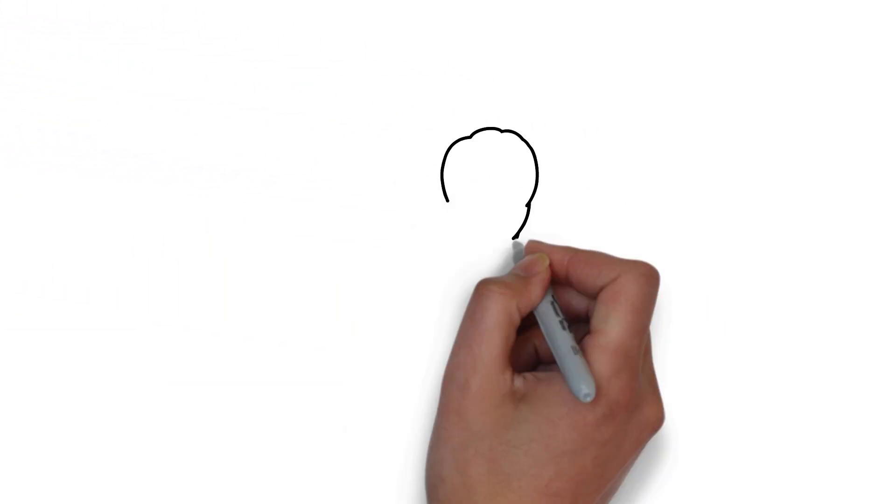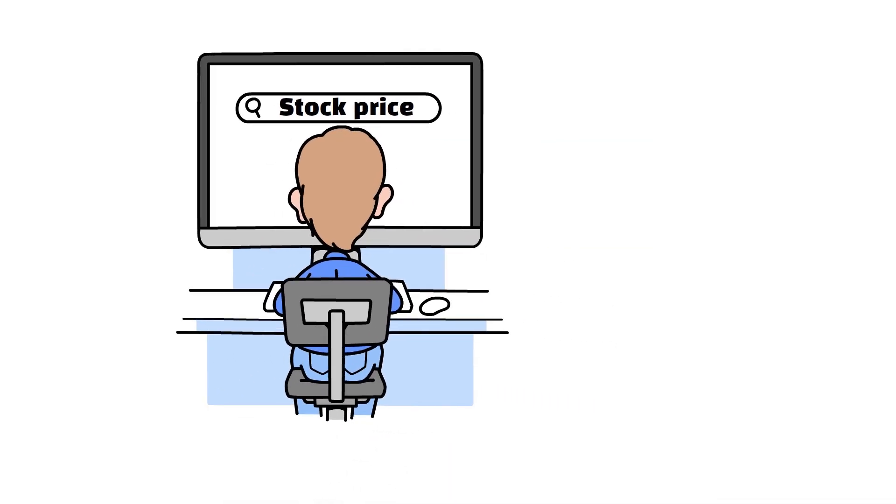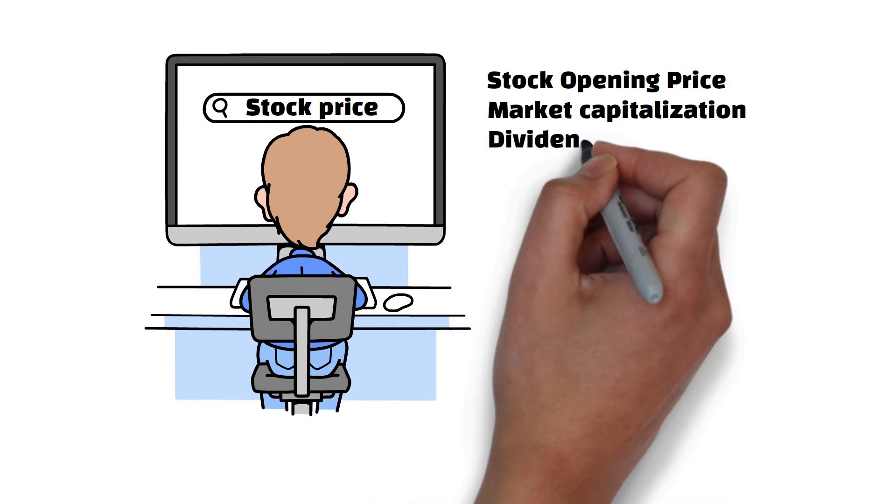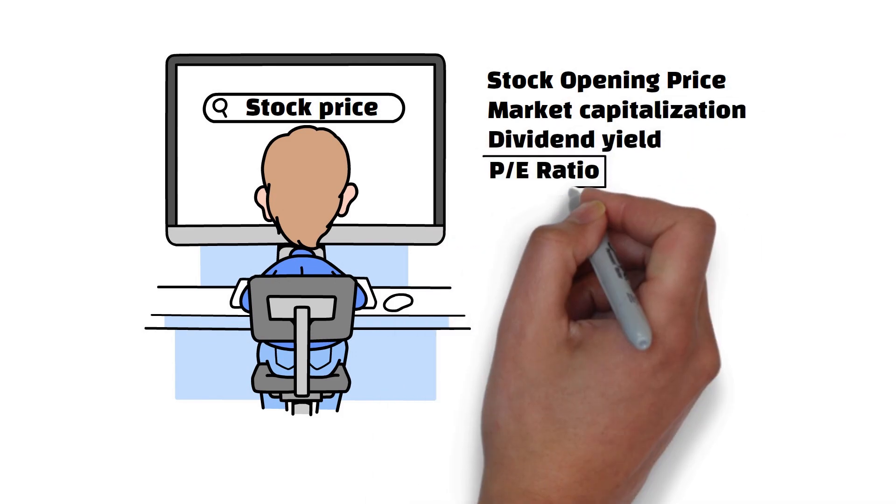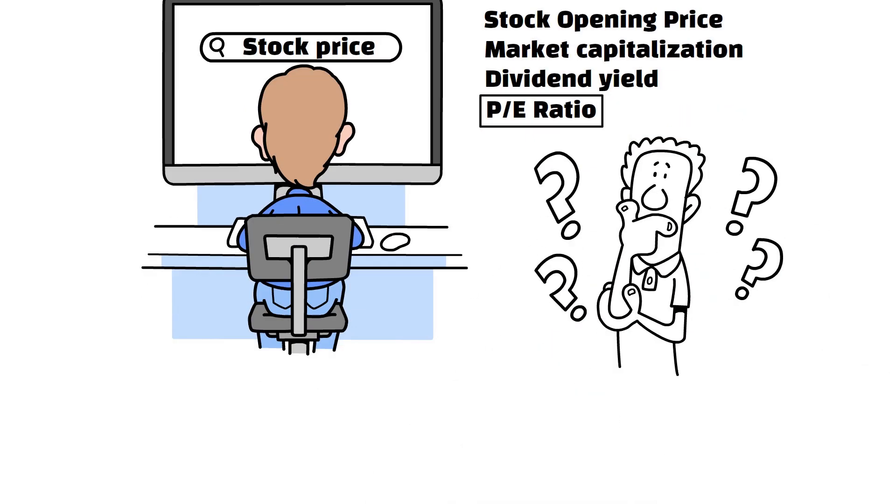When you Google a stock price, some basic information pops up like the stock's opening price, market capitalization, and dividend yield. You'll also notice something called the P-E ratio in the mix. We'll explain it with examples later, but first, what is it and why should you care?